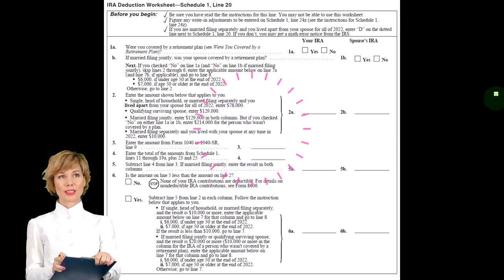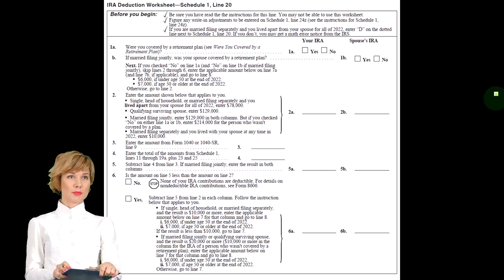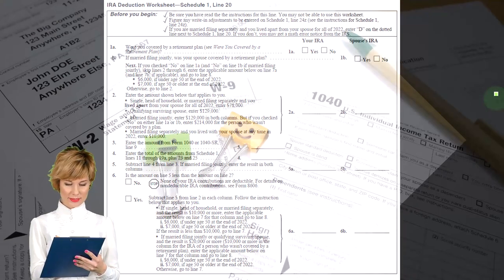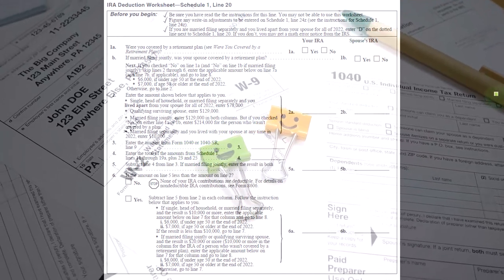Fortunately, you could put money into an IRA generally up until the point that you file the tax return, not including extensions. And therefore, you can do a bit of the last minute tax planning.